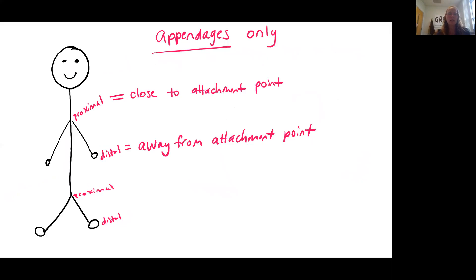The next set of terms are proximal and distal. Now these apply just to your appendages. The term proximal means closest to the attachment point. So for the upper appendage, that's the shoulder. For the lower appendage, that's the hip. And then distal means the furthest away from the attachment point. So on the upper appendage, that's going to be your fingers, and then on your lower appendage, that's going to be your toes.